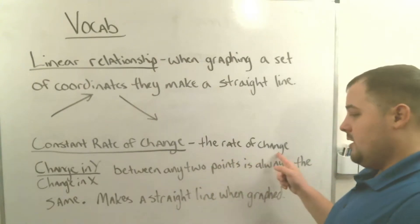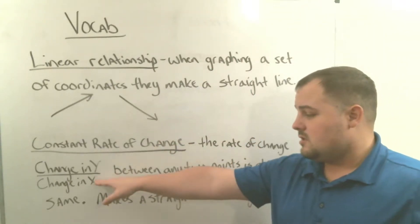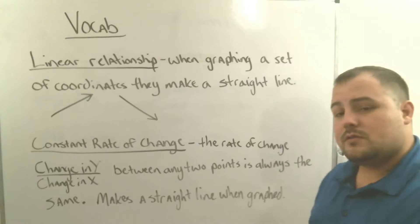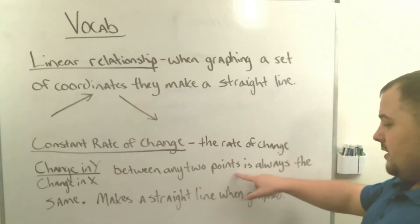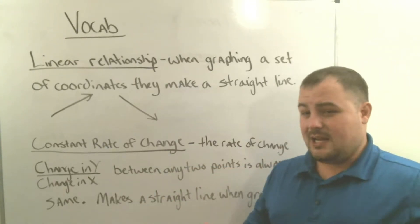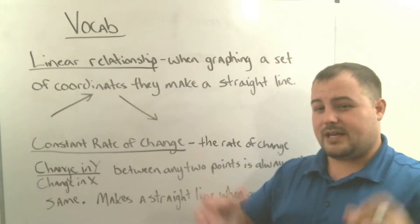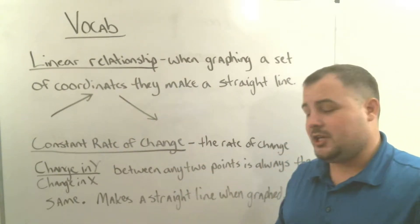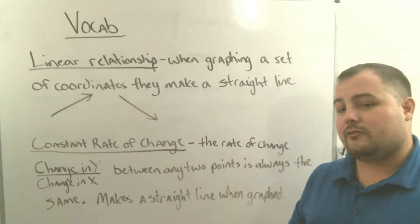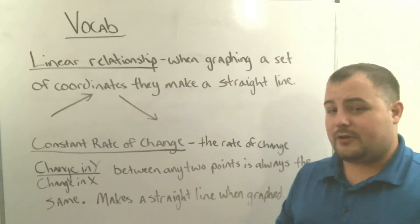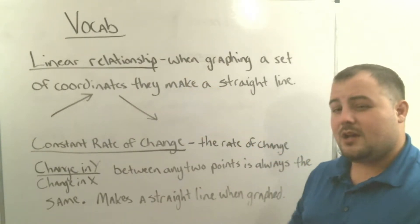Constant rate of change is when we find the rate of change — hopefully we remember this from seventh grade. Rate of change is the change in the y values divided by the change in the x values. If we have a constant rate of change between any two points and it's always the same, that means when we divide the change in y by the change in x, we always get the same number. A constant rate of change will make a straight line when graphed, giving us a linear relationship. Without a constant rate of change, it won't make a straight line.